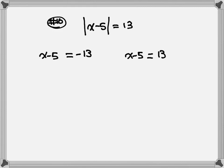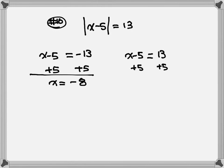Now you set it up and solve. On the left-hand equation, let's get rid of the negative 5, so plus 5 on both sides — x equals negative 8. On the right equation, plus 5 on both sides — x equals 18.